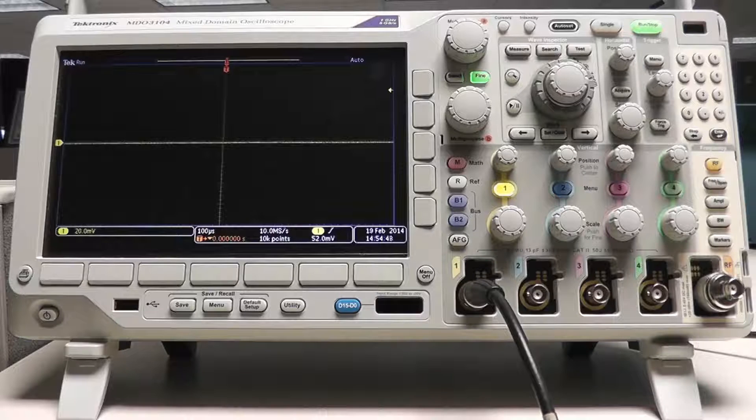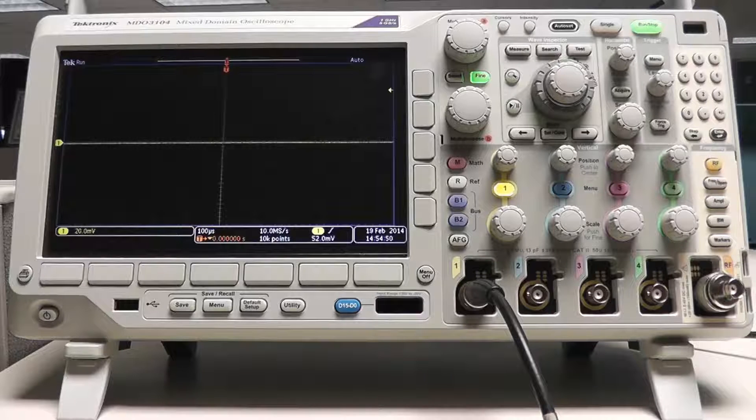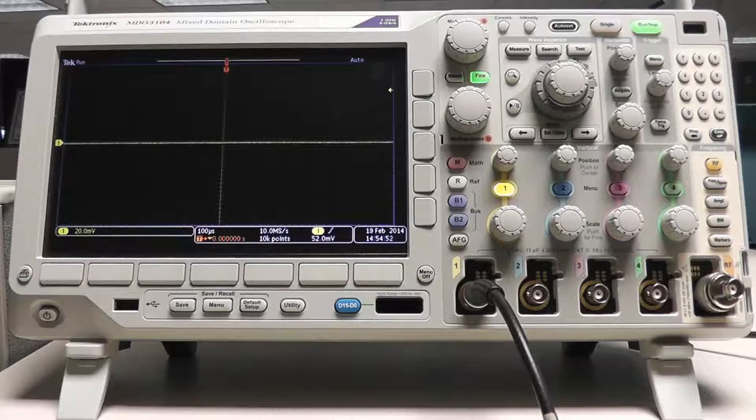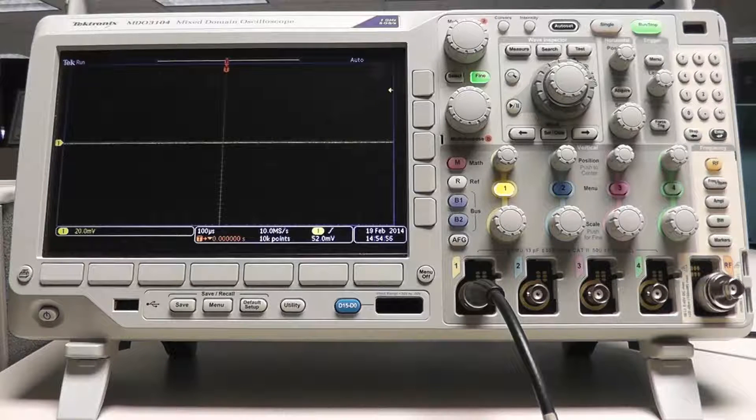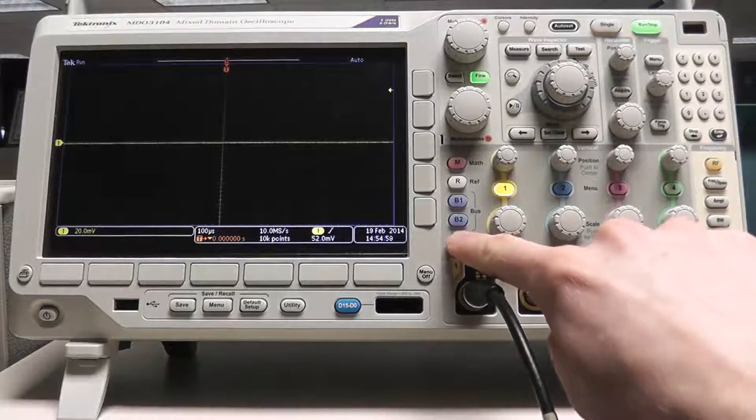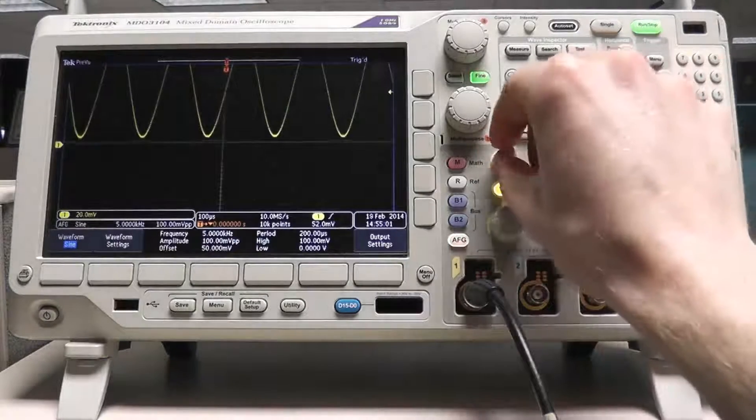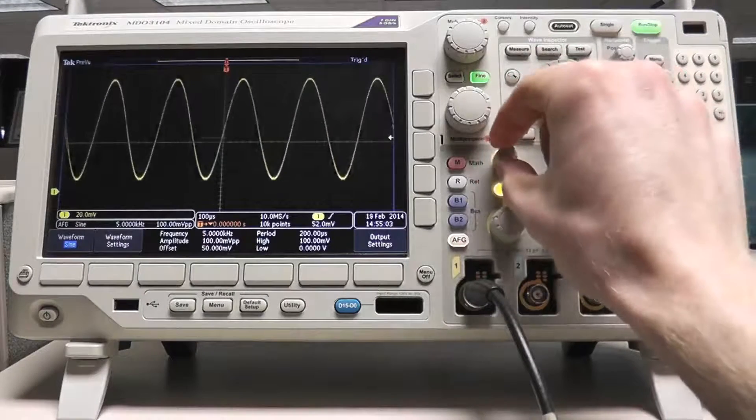The DVM measurements are free-running in relation to the scope's acquisition system, so its measurements are always updating even if the scope isn't actively acquiring data. For this demo, I'm using the MDO 3000's built-in AFG to generate the signals that will be measured by the DVM.